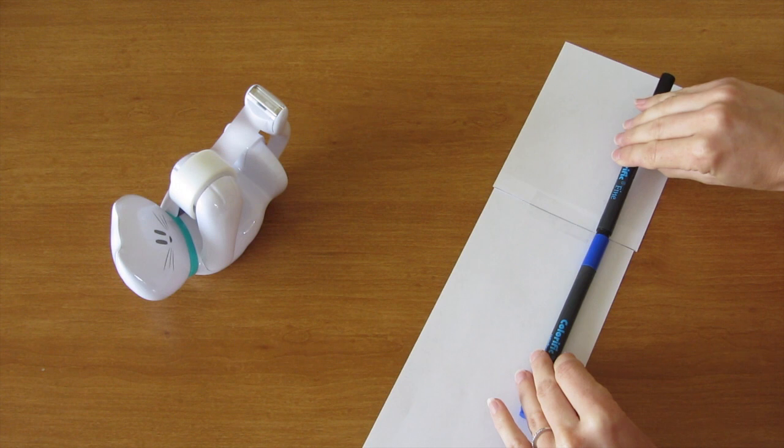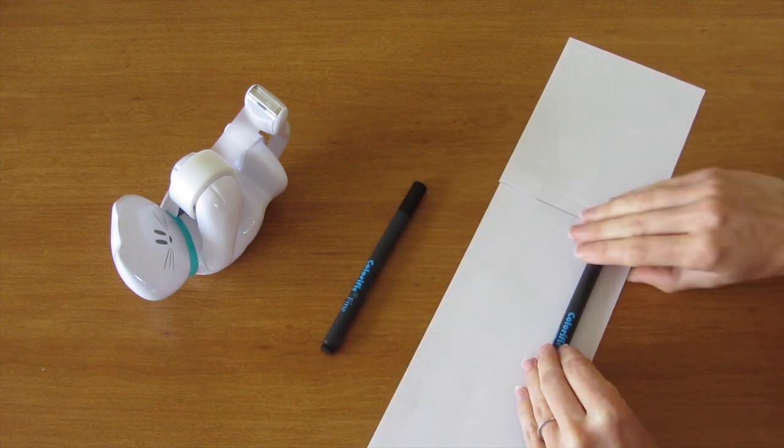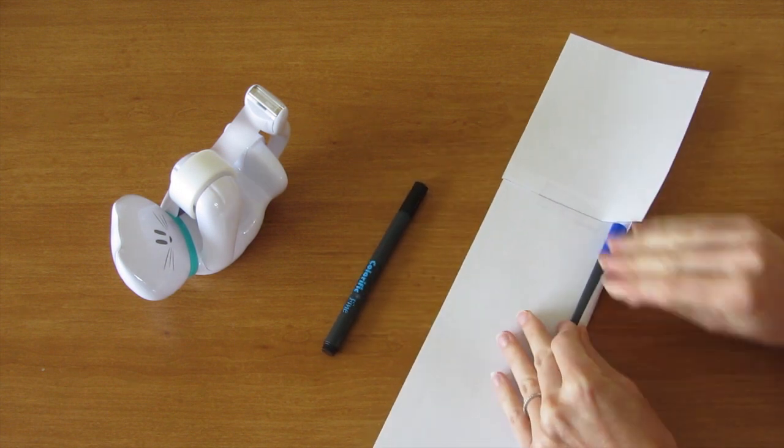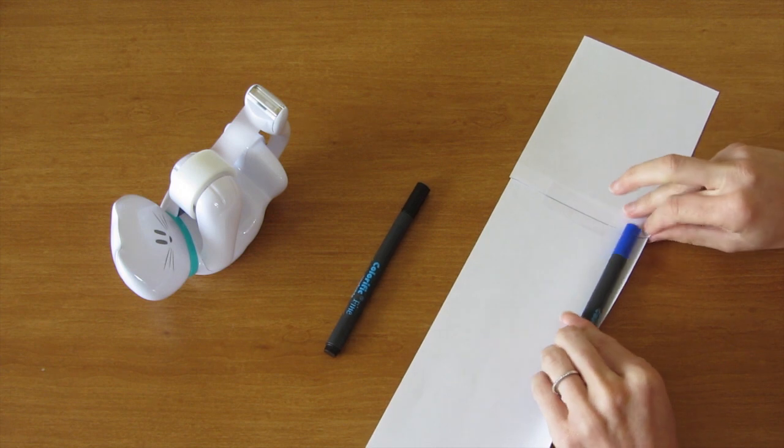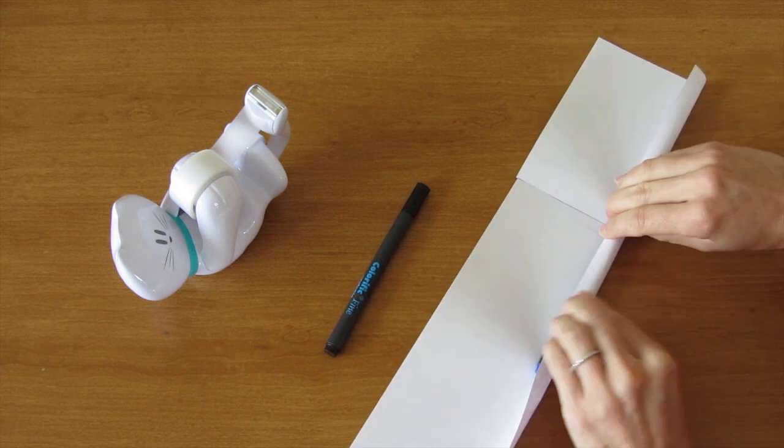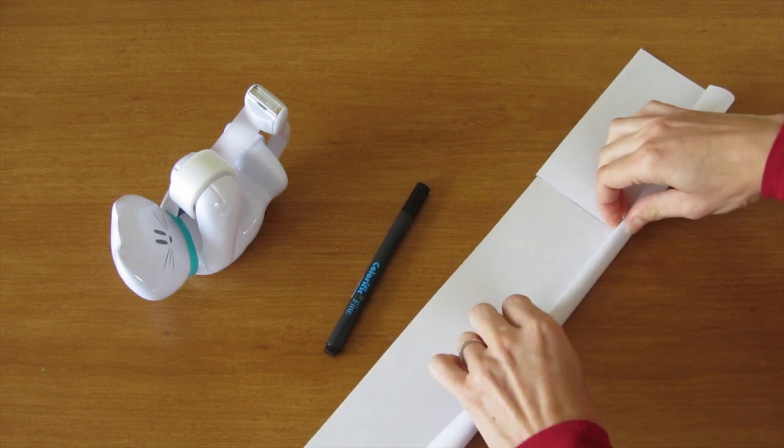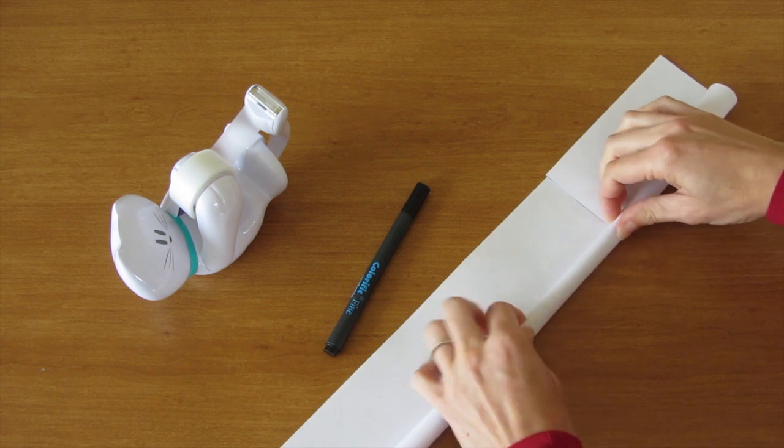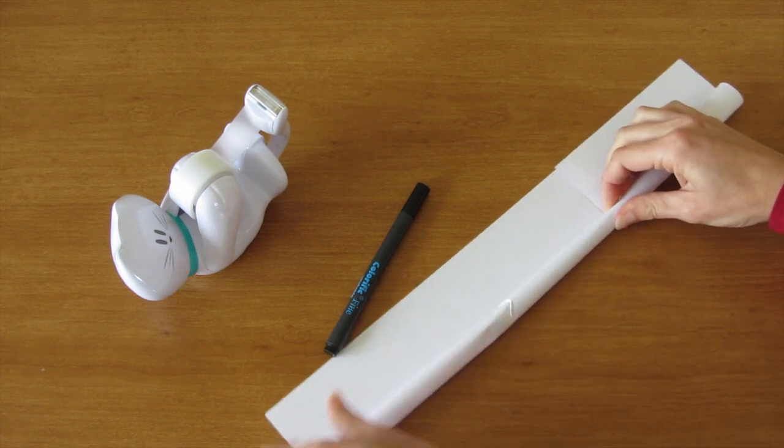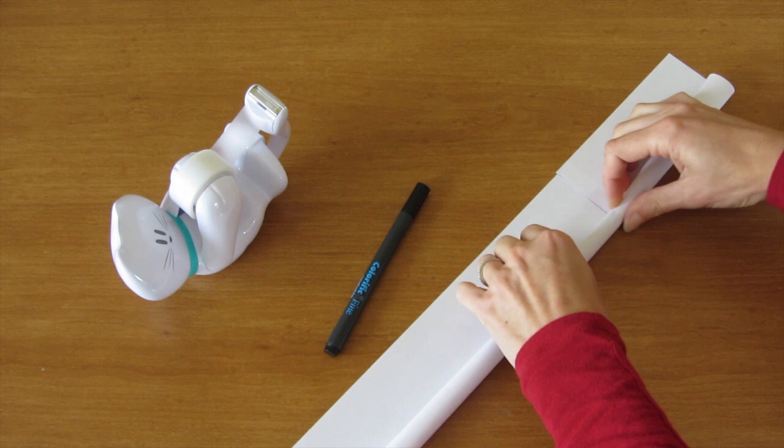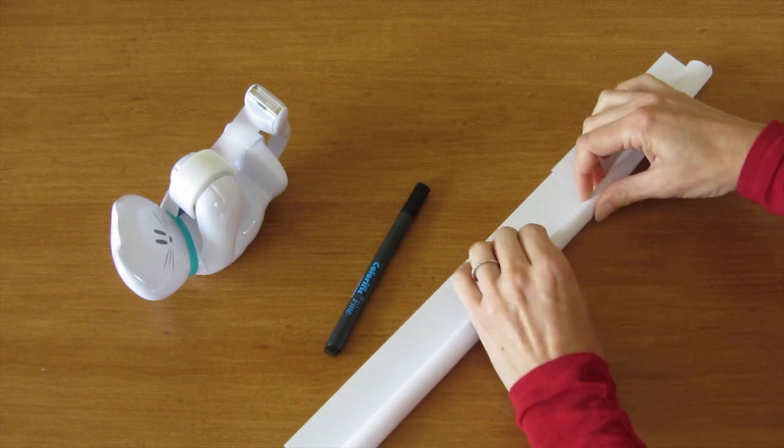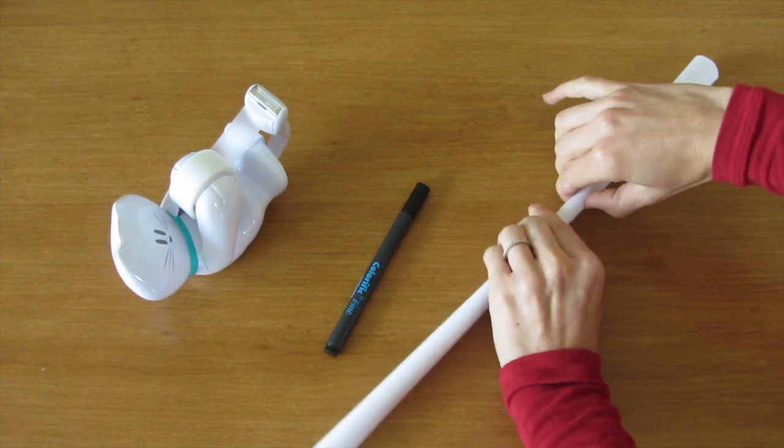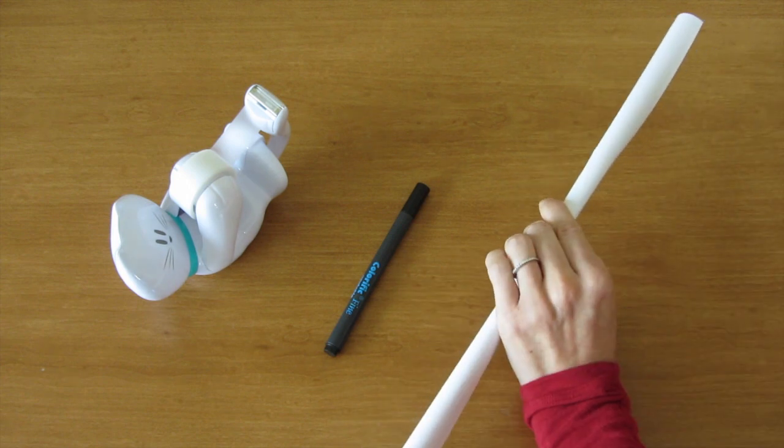If you have two markers that fit together, mine don't, but if yours do, that might help you have something longer to roll your cylinder around. And when you finish rolling, you're going to tape this in four places since it's larger. And then you'll do the same thing with the slits at the bottom.